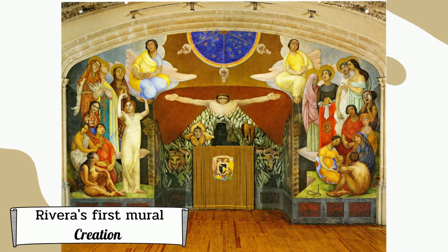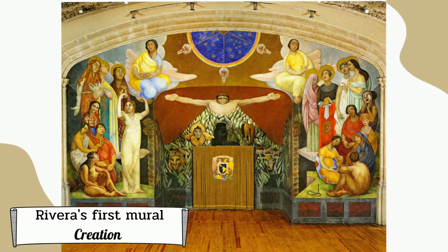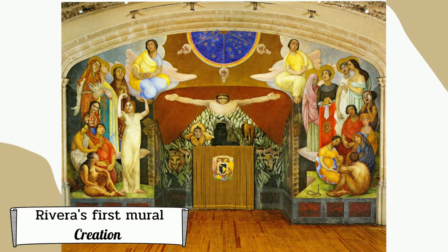The first mural he painted was named Creation, painted in 1922 to 1923. He used the encaustic technique, which involves applying color pigment onto hot wax, common in Greek and Roman painting. It is a composition of mythology and religious motifs. At the top, the symbol represents the divine trinity with a blessing hand.